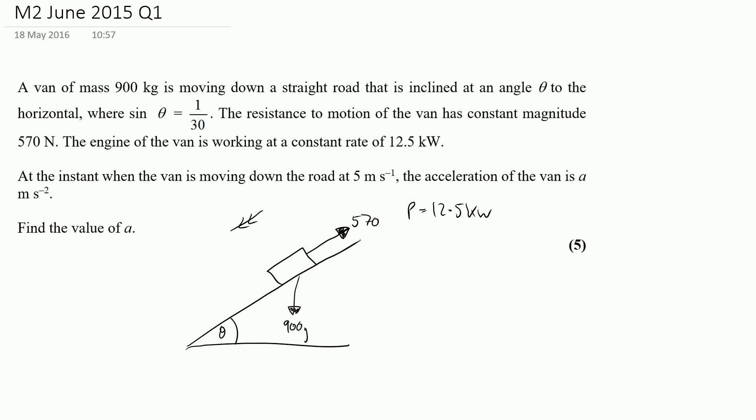So from this point what do we want to do? The instant when the van is moving down the road 5 m per second the acceleration of the van is A. Find the value of A.